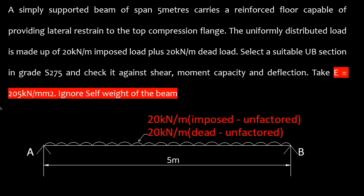Take E as 205kN/mm² and ignore the self-weight of the beam. So this is the diagram. We have a beam of 5m span. There's a UDL of 20kN/m that is imposed and 20kN/m that is dead.